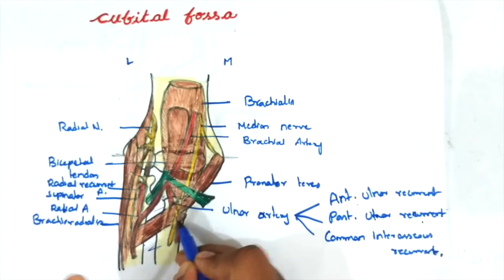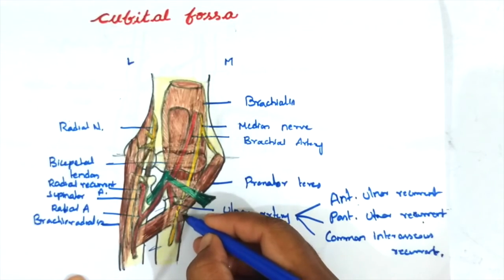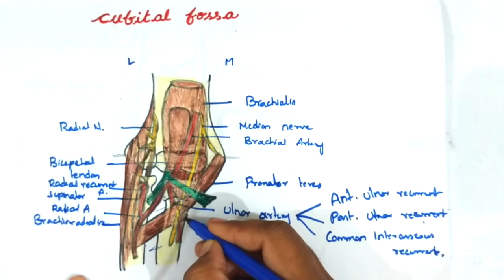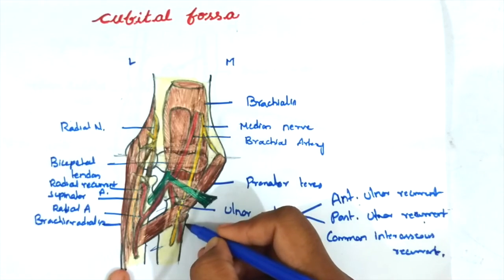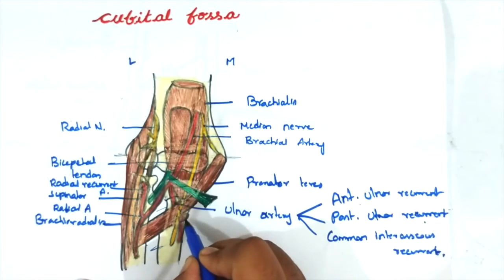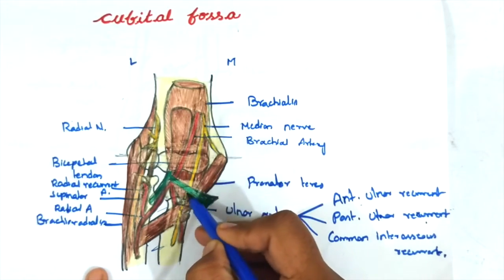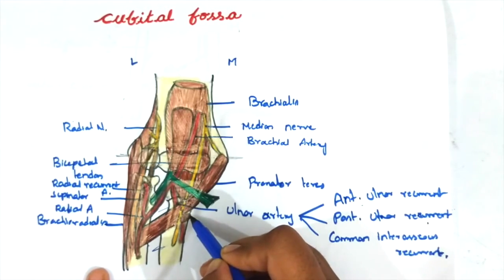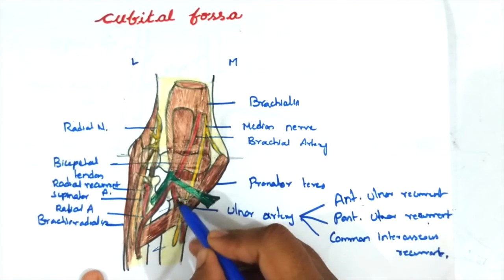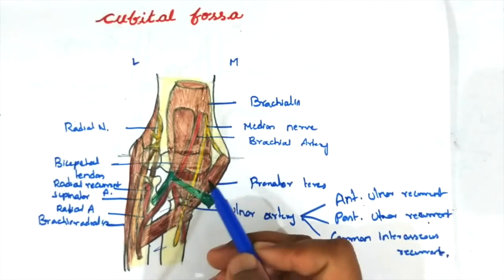After giving these branches, the ulnar artery passes beneath the ulnar head of the pronator teres muscle. The median nerve and the ulnar artery are thus separated by the ulnar head of the pronator teres. The median nerve passes between the two heads — the humeral head and the ulnar head — while the ulnar artery passes beneath the deep head of the pronator teres.